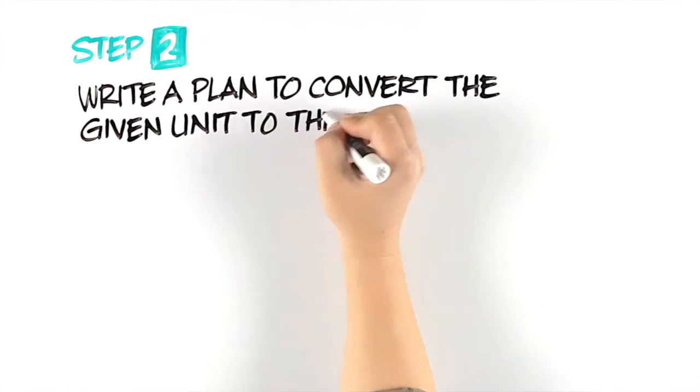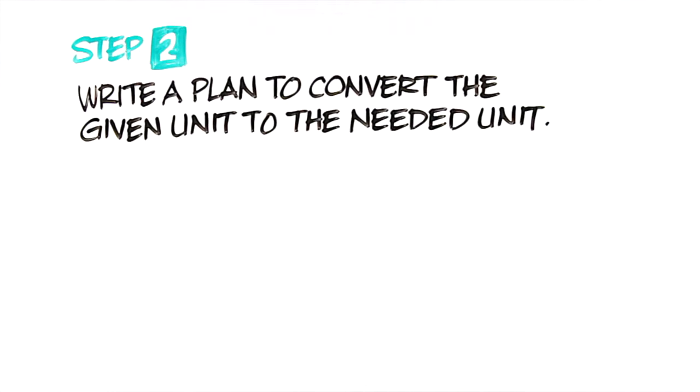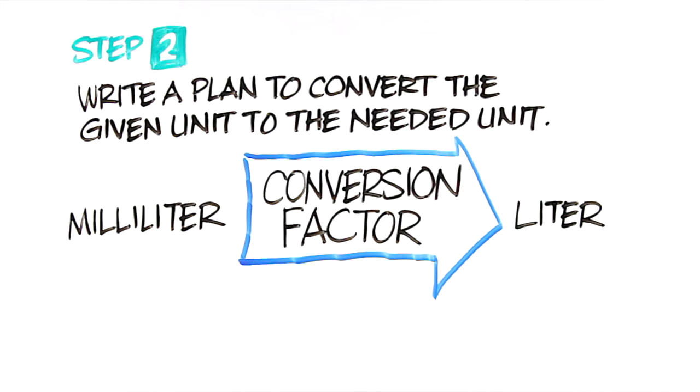The second step is to write a plan to convert the given unit to the needed unit. What is that plan? You know that you have an amount in milliliters, and you need to find that amount in liters. As you learned in the text, in order to go from one to the other, you use a conversion factor.